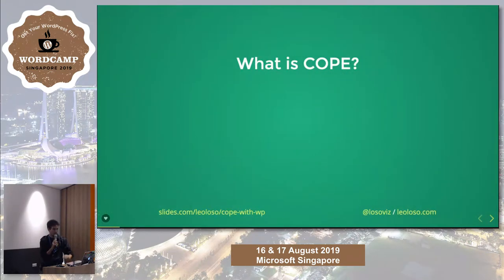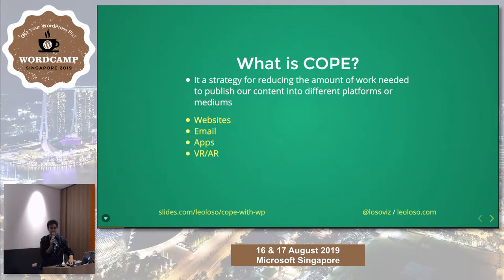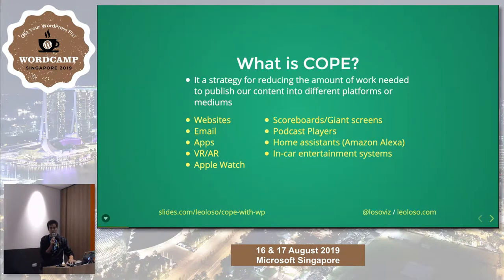So what is COPE? It is a strategy for reducing the amount of work needed to publish your content into different platforms or mediums. Like which ones? Like websites, email, apps, virtual reality, augmented reality, Apple Watch, scoreboards or giant screens, podcasts, home assistants like Amazon Alexa, in-car entertainment systems, or others — you name it.